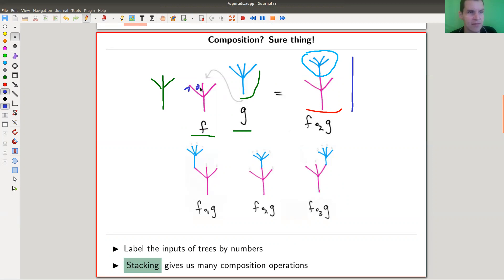Let's just label the inputs of f, one, two, three, just some labeling to be sure which edge is which. And then you could have, in this case for f, three multiplication operations. You could stack blue on the first edge, you could stack blue on the second edge, or stack blue on the third edge. So you can just have a lot of operations now. And that's pretty cool, stacking gives us a lot of compositions for the same type of pictures.